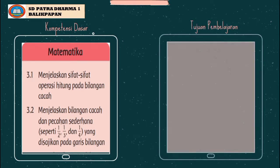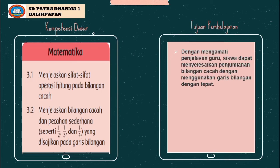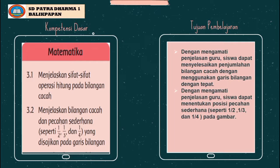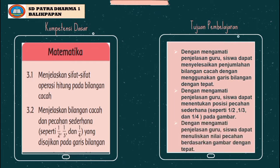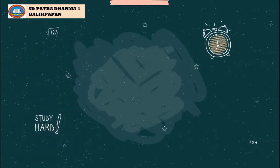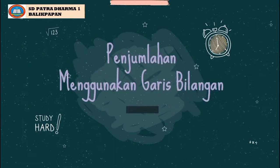Tujuan pembelajaran: Pertama, dengan mengamati penjelasan guru, siswa dapat menyelesaikan penjumlahan bilangan cacah menggunakan garis bilangan dengan tepat. Kedua, siswa dapat menentukan posisi pecahan sederhana seperti 1/2, 1/3, dan 1/4 pada gambar. Ketiga, siswa dapat menuliskan nilai pecahan berdasarkan gambar dengan tepat. Hari ini kita akan membahas penjumlahan menggunakan garis bilangan, subtema 3.